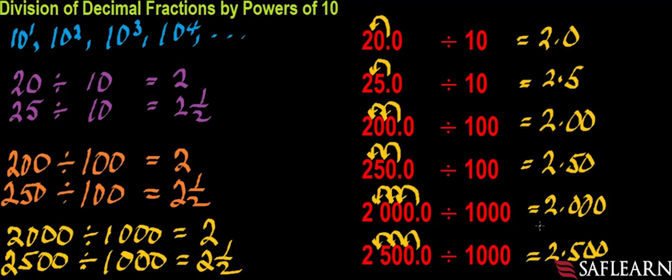Very interesting, isn't it? Notice that the number of spaces the decimal point is moved is the same as the number of zeros in the divisor. What do you mean by divisor? A divisor is a number that divides another number.